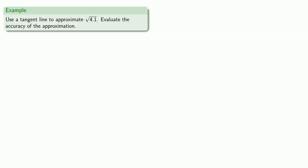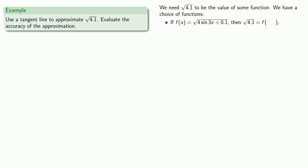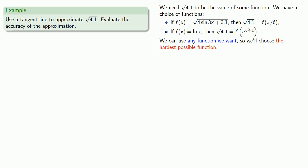For example, let's use the tangent line to approximate the square root of 4.1, and evaluate the accuracy of this approximation. To proceed, we'll need square root of 4.1 to be the value of some function. We have our choice of functions — we can use the simplest possible function. If f of x equals square root of x, then square root of 4.1 is going to be our function evaluated at 4.1.